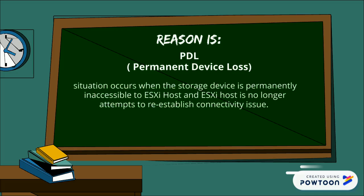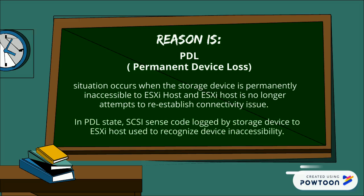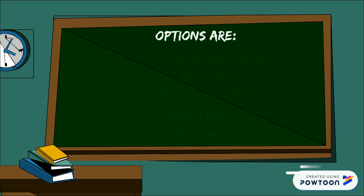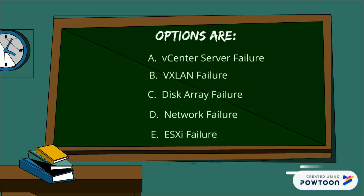PDL — Permanent Device Loss — occurs when the storage device is permanently inaccessible to the ESXi host, and the host no longer attempts to reestablish connectivity. In a PDL state, the SCSI sense code locked by the storage device is used by the ESXi host to recognize device inaccessibility.